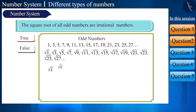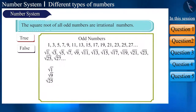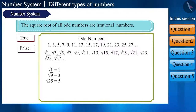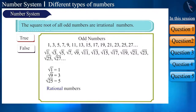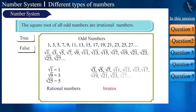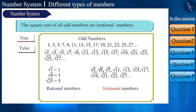The square roots of 1, 9, and 25 are 1, 3, and 5 respectively, which are natural or rational numbers. All the other numbers are irrational numbers. Hence, the statement that the square root of all odd numbers are irrational numbers is false.